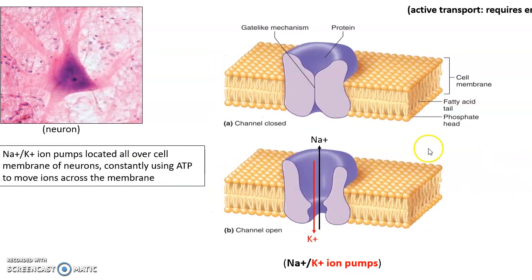In our neurons, we have active transport occurring all the time via the sodium-potassium ion pumps. Constantly moving potassium into the cell and sodium out requires energy and is critical for keeping the charge balance across the membrane of our neuron. Keeping high concentration sodium outside, high concentration of potassium on the inside. Very important. This is a form of active transport.